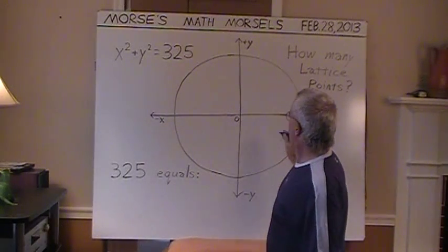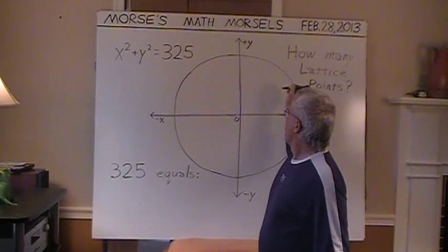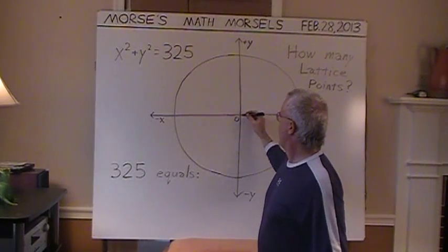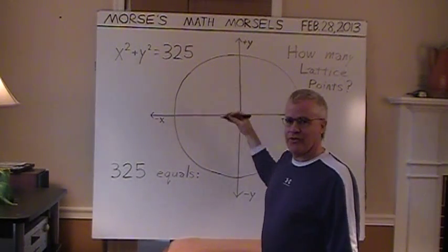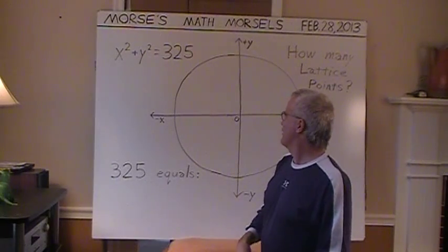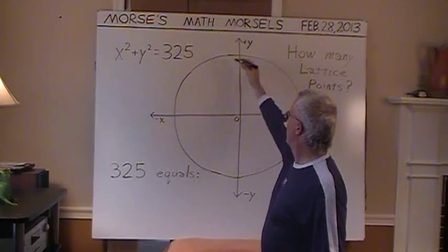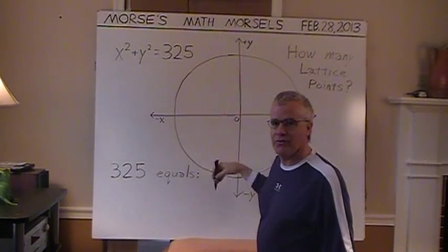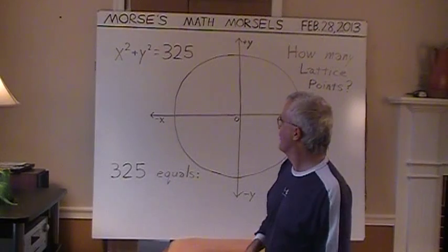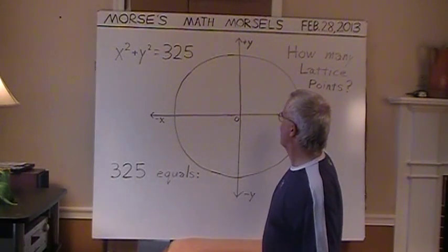And how many lattice points are on this circle? Well, the circle is centered on the origin, so there's a lot of symmetry in this graph. So if we could find out the number of lattice points in one of these four sections, which are called quadrants, we could answer that question more readily.